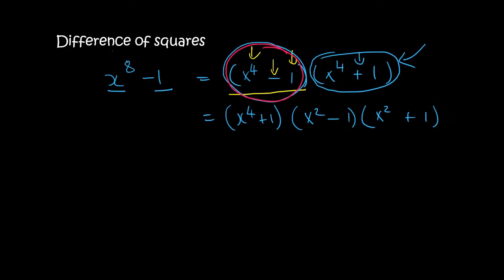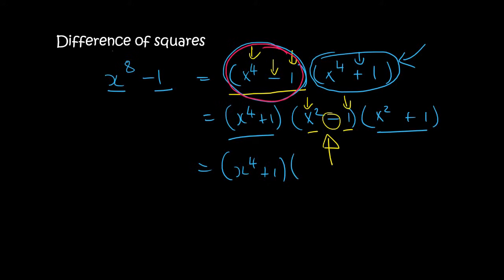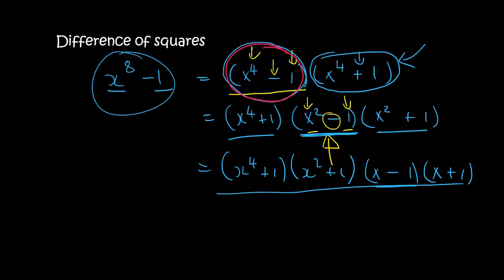But we're still not done, because (x² - 1) has two terms with a minus, and each is a perfect square: x times x gives x², and 1 times 1 gives 1. So we add the brackets we can't factor to the front and open up two more brackets: (x + 1)(x - 1). Now we are finished, because these can't go any further. So x⁸ - 1 fully factorizes to (x⁴ + 1)(x² + 1)(x + 1)(x - 1).